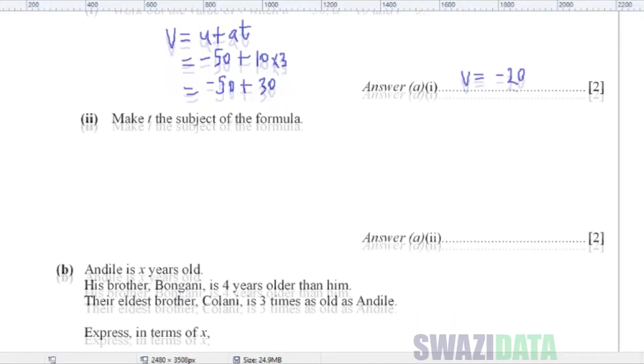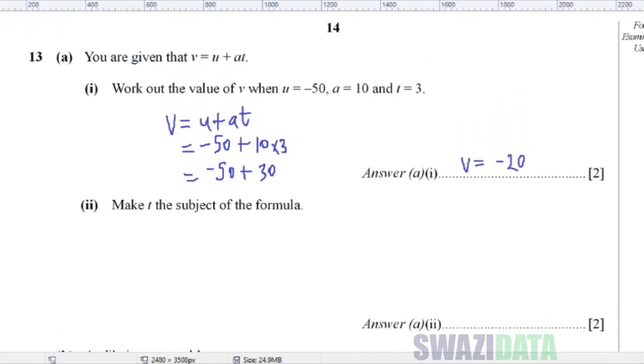Next question says, make T the subject of the formula. So we have the formula V is equal to U plus A T. So we have to make this the subject of the formula.